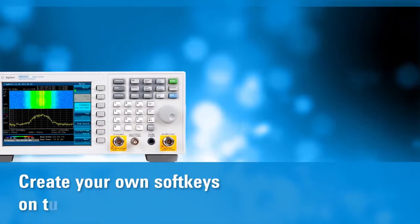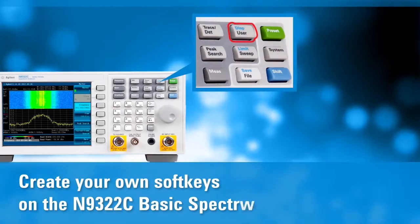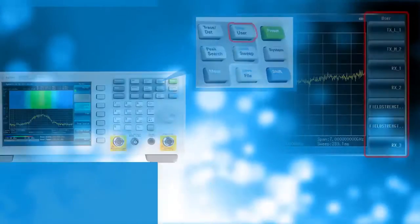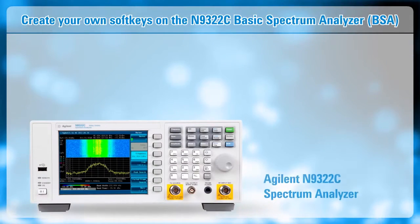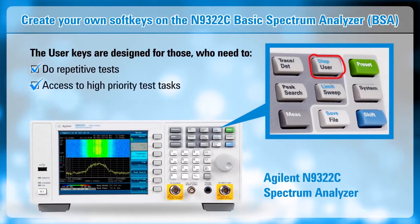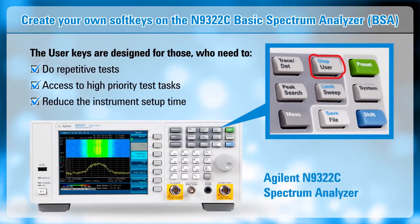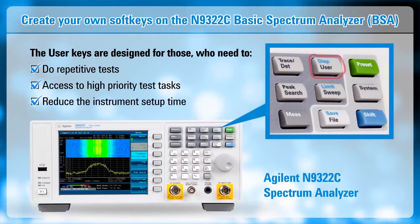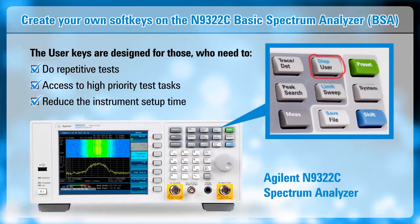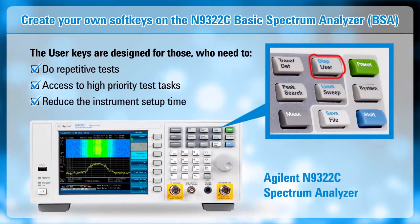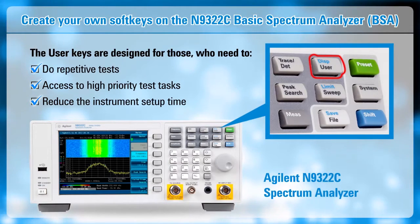Create your own soft keys on the N9322C Basic Spectrum Analyzer. Today's demonstration will show you how to personalize the user key on the Agilent N9322C BSA Basic Spectrum Analyzer. This key allows you to define and recall frequently used state files. It's a particularly helpful feature for production line operators and other users that need to perform repetitive measurements.